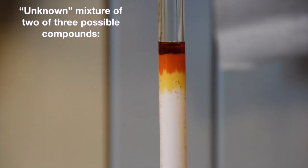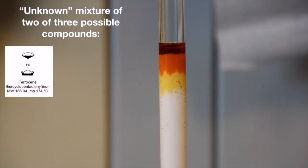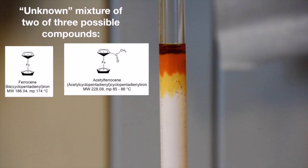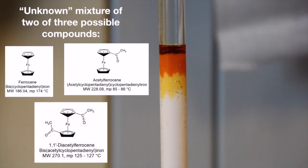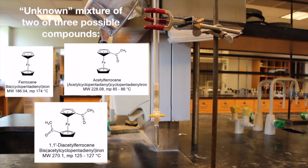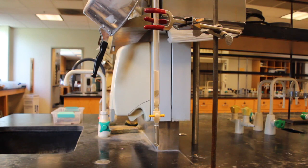In this experiment, you will be given a mixture of two of three possible compounds: ferrocene, acetyl ferrocene, and diacetyl ferrocene. The first step will be to devise a chromatographic system to separate the three compounds in the mixture. The solid phase will be alumina, but you will need to determine the solvents to be used.